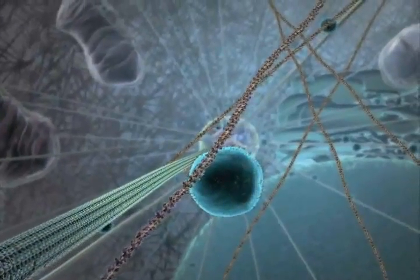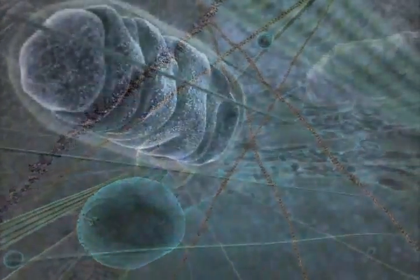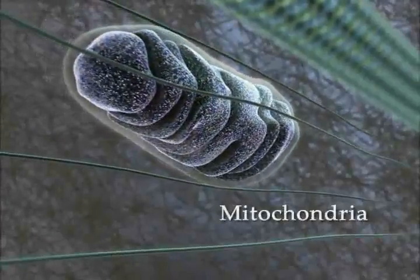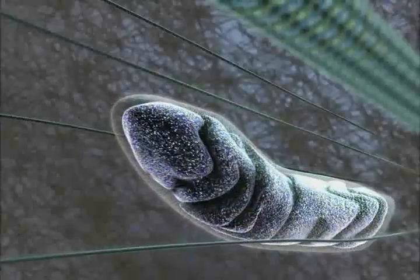Membrane-bound organelles, like mitochondria, are loosely trapped by the cytoskeleton. Mitochondria change shape continuously, and their orientation is partly dictated by their interaction with microtubules.